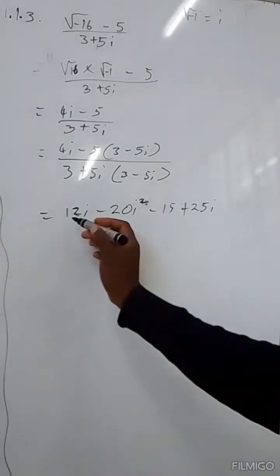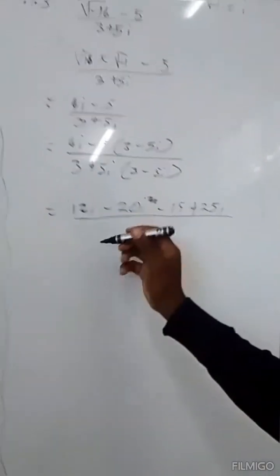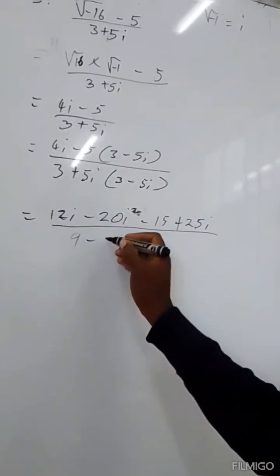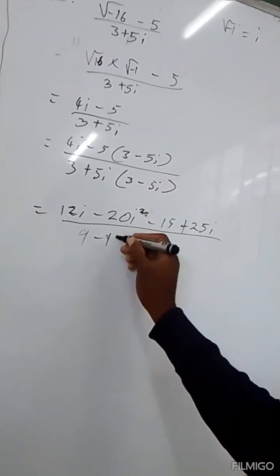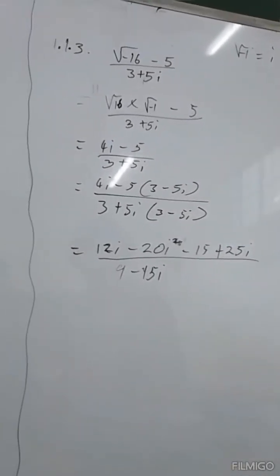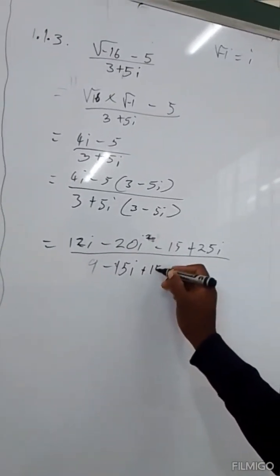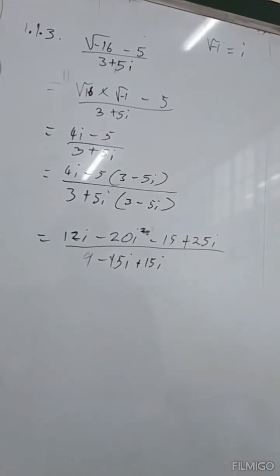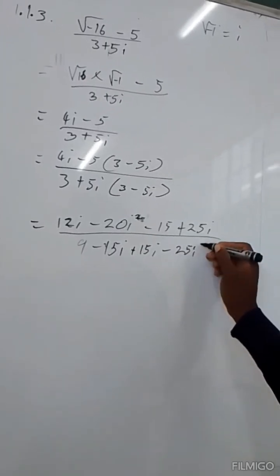Then for the denominator: 3 times 3 equals 9; 3 times negative 5i equals negative 15i; 5i times 3 equals positive 15i; 5i times negative 5i equals negative 25i squared.